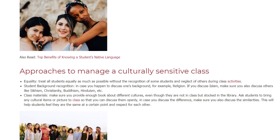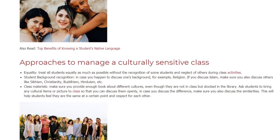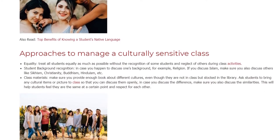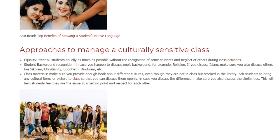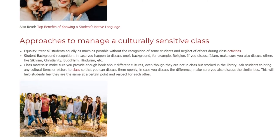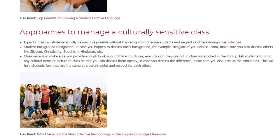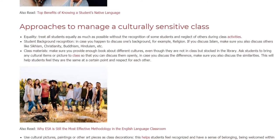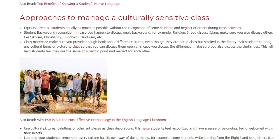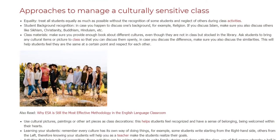Class Materials: Make sure you provide enough books about different cultures, even if they are not in class but stocked in the library. Ask students to bring cultural items or pictures to class so you can discuss them openly. When discussing differences, make sure you also discuss similarities — this helps students feel they are the same at certain points and fosters respect. Use cultural pictures, paintings, or other art pieces as class decorations so students feel recognized and welcomed.